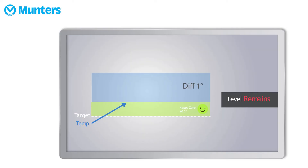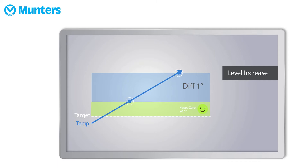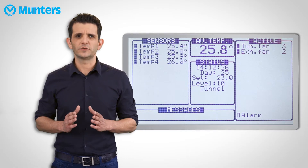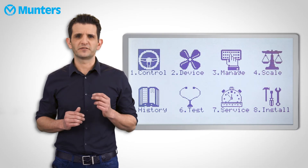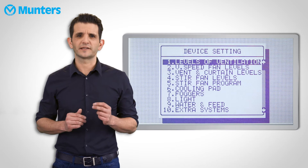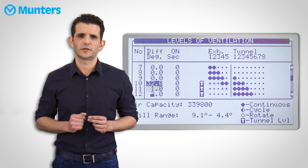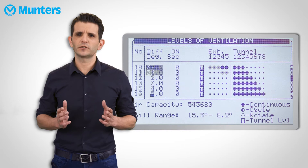Another reason is the windchill differential. Remember that if you have a differential defined in the next level, this means that the controller would only increase the level when the temperature goes above target or tunnel plus differential. In that case, press Menu and select Device, then select Levels of Ventilation and scroll to the level in question. Now simply lower the differential.